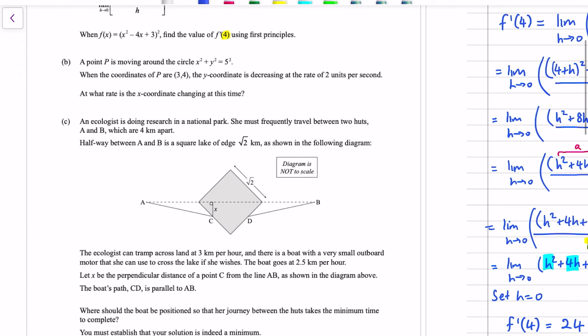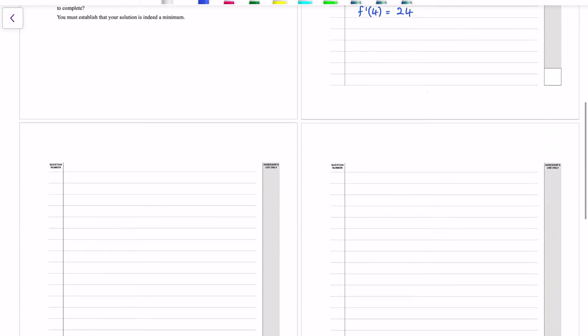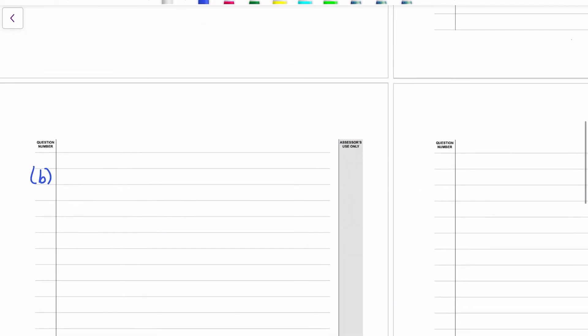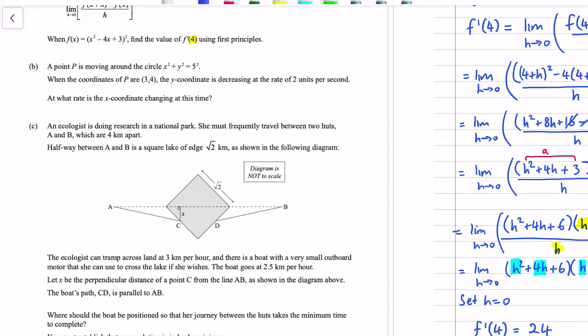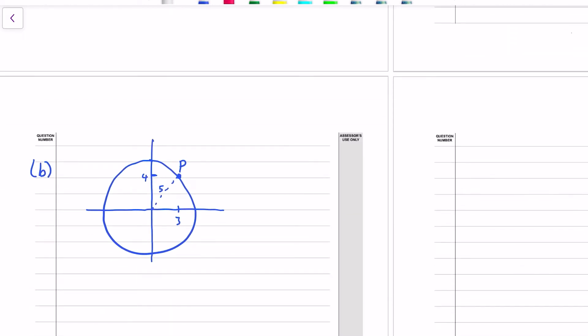Second question. Point P is moving around the circle, x squared plus y squared equals 5 squared. When the coordinates are 3, 4, the y coordinate is decreasing at the rate of 2 units per second. What rate is the x coordinate changing? So the first thing is, this is a circle of radius 5 centred at the origin. Drawing in a circle. Pretty crappy circle, but we've got the point there of 3, 4. And that radius is 5, it's a Pythagorean triple. So this is the point P. And we're told that the y coordinate is decreasing at a rate of 2 units per second. So as P is moving around the circle, it must be going this way, because the y value is going downwards at that point, and therefore the x value is increasing at that point if it's moving clockwise.